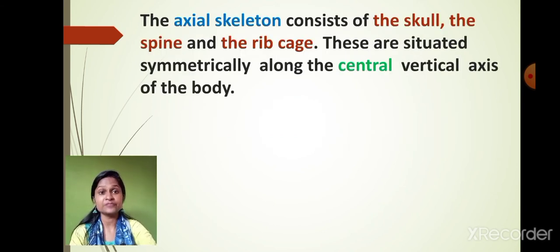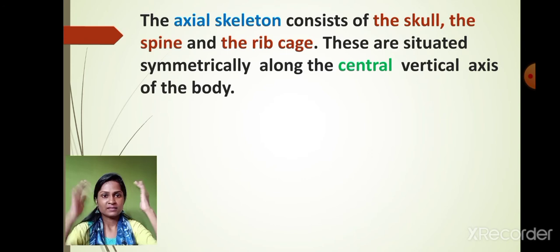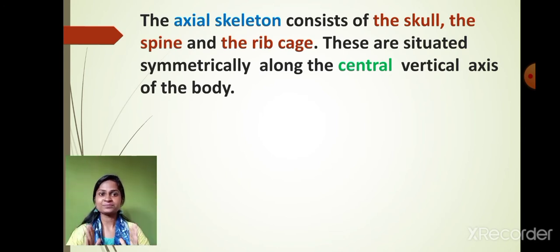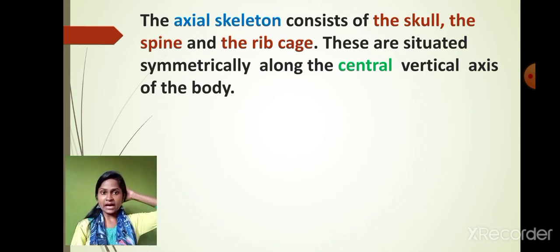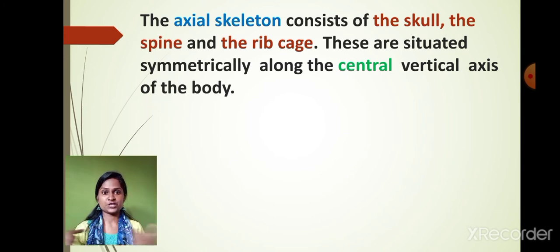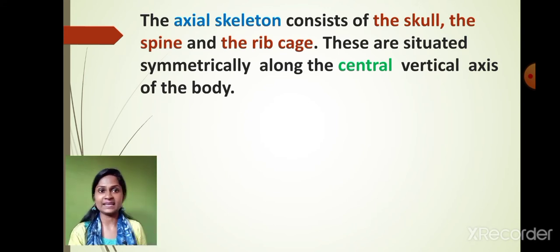In the axial skeleton, our skull comes first — that is our head bone. The spine, which is our backbone, also comes under the axial skeleton. And our rib cage, the chest bone, comes under the axial skeleton as well. So the skull, spine, and rib cage all come under the axial skeleton.